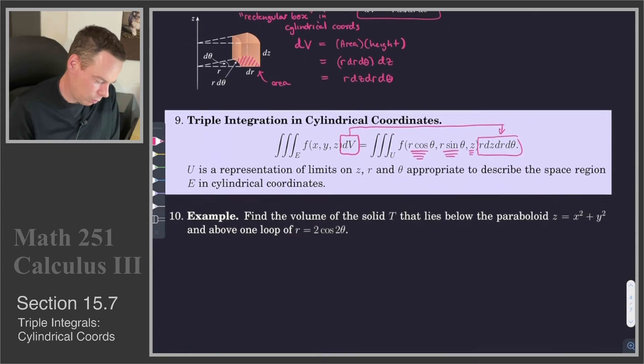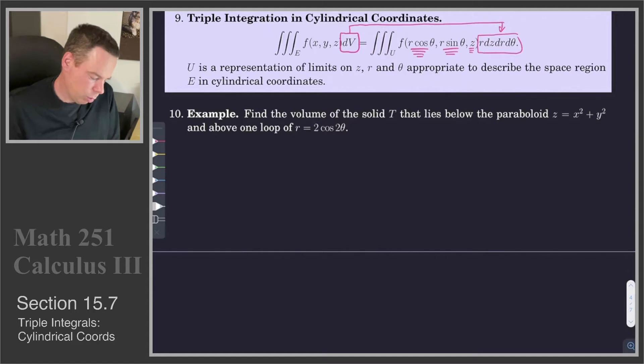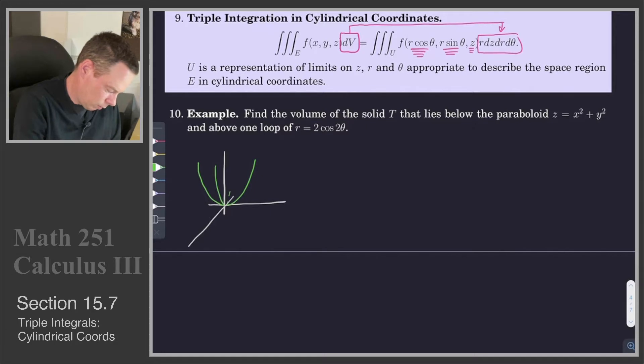So let's go ahead and do this for an example. Let's find the volume of the solid T that lies below the paraboloid and above one loop of this polar curve. So our region looks like it's our paraboloid. Our paraboloid's opening up. And then we are interested in the region above one loop of this polar curve in the plane.